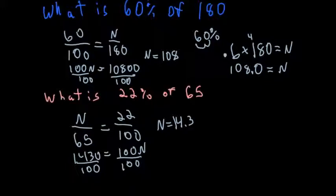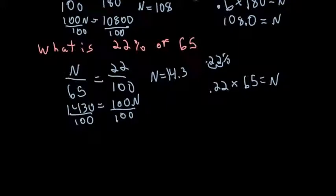So I get N equals 14.3. If I was to do that as an equation, I take my 22% and make it a decimal, so that would be 22 hundredths times 65 equals some number. And I got to work that out, get a little more room to work that out. So that would be 65 times 22 hundredths.